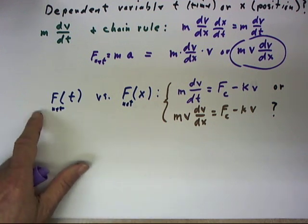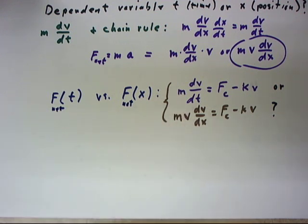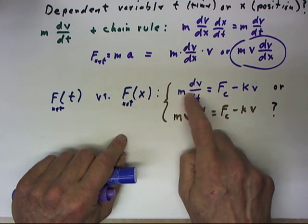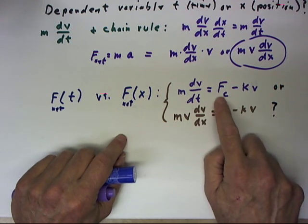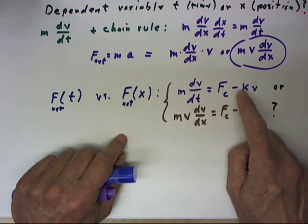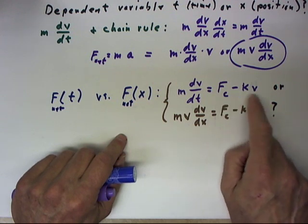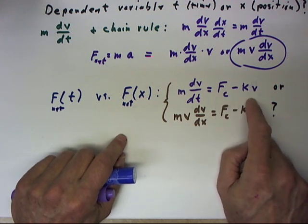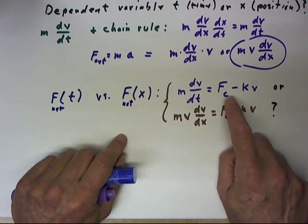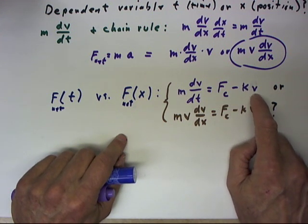If we know the net force is a function of t, then it makes sense to solve the equation m dv/dt equals whatever, maybe our constant force is minus kv. This would apply to the situation where the drag force is proportional to the velocity.